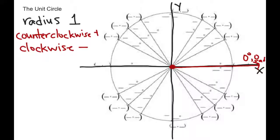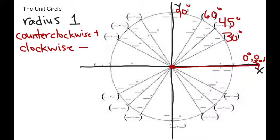Our special angles are here, and we're going to talk about them in both degrees and radians. If I go counterclockwise, the first special angle you come across is 30 degrees. The next one is 45 degrees, and the next one is 60. Then when you get up to here, you're at 90 degrees, which makes sense because you've just made a right angle. Then I'm at 120, 135, 150.